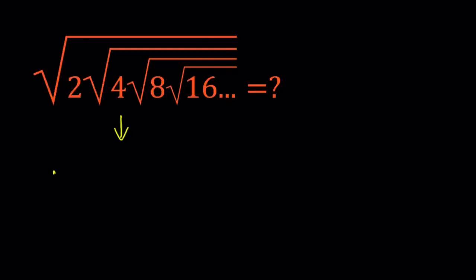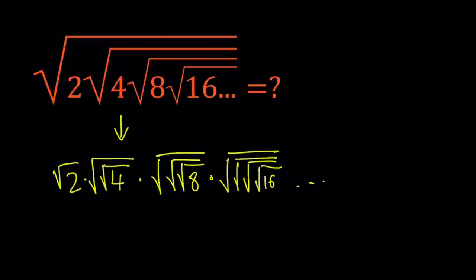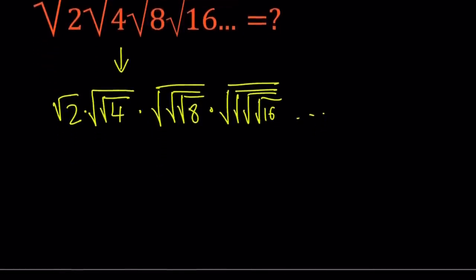We have the square root of 2, and then the square root of 4 is going to be square root twice, so it's the square root of the square root of 4, and then times the square root of the square root of the square root of 8, and then it's going to be 4 times for the 16, and so on and so forth. This is going to give us a pattern which we're going to work out, and we're going to be using some series here and find the result.